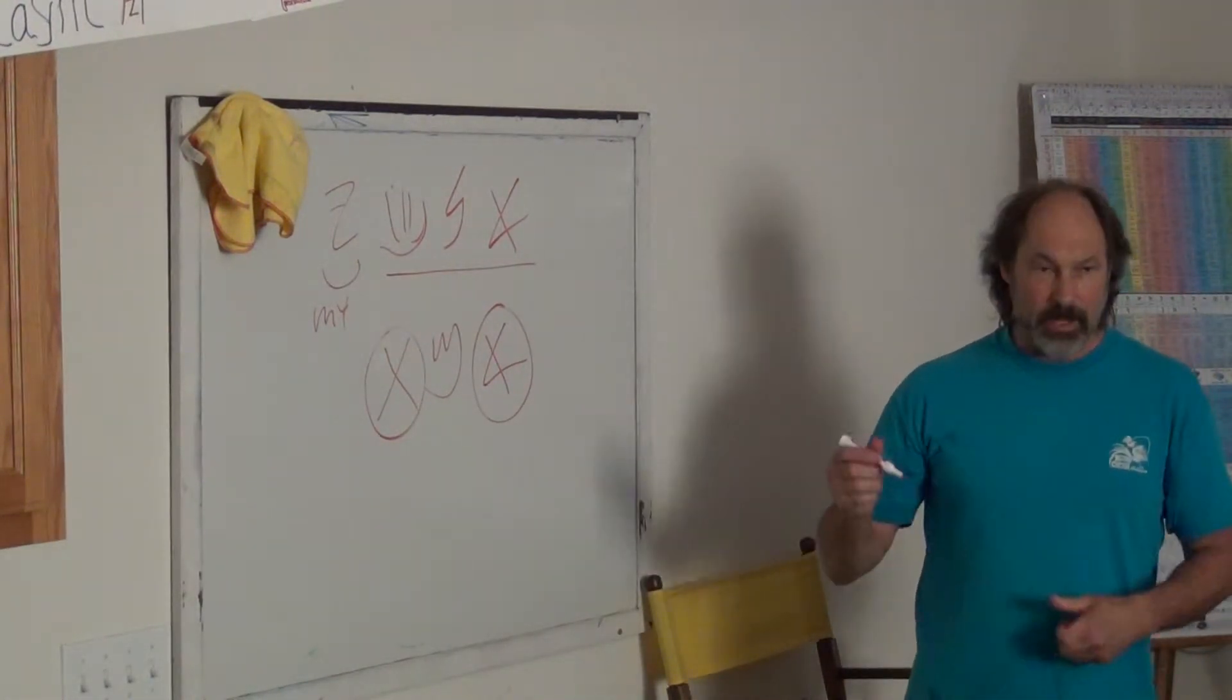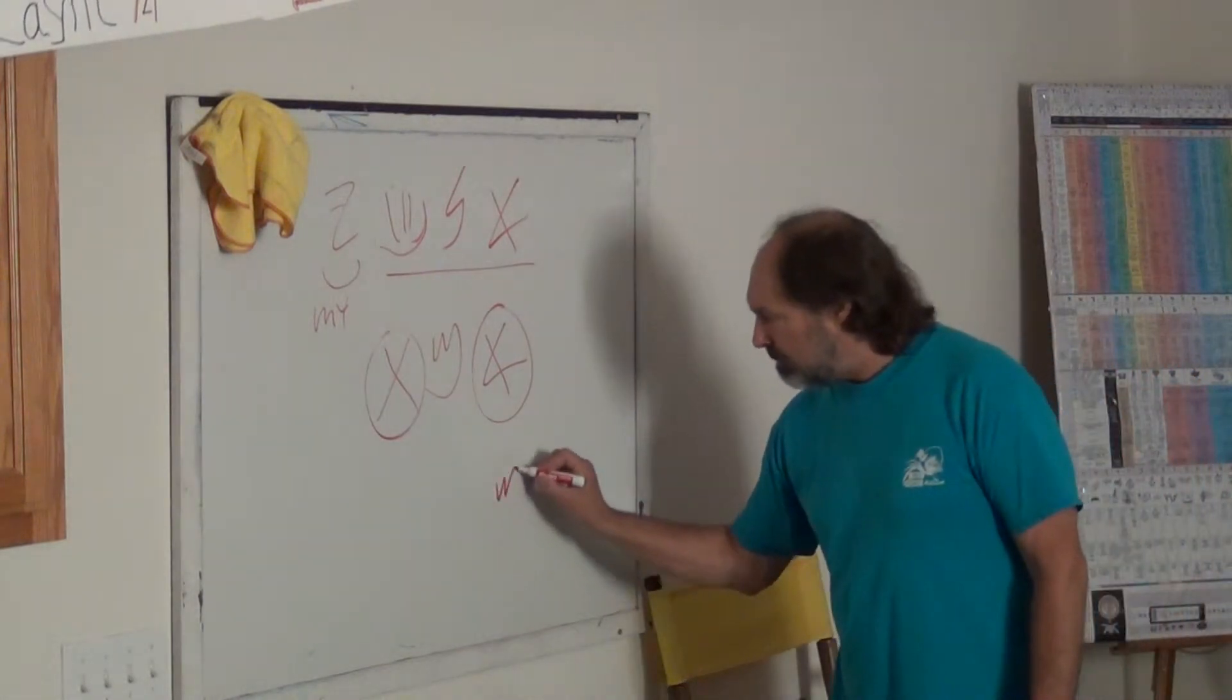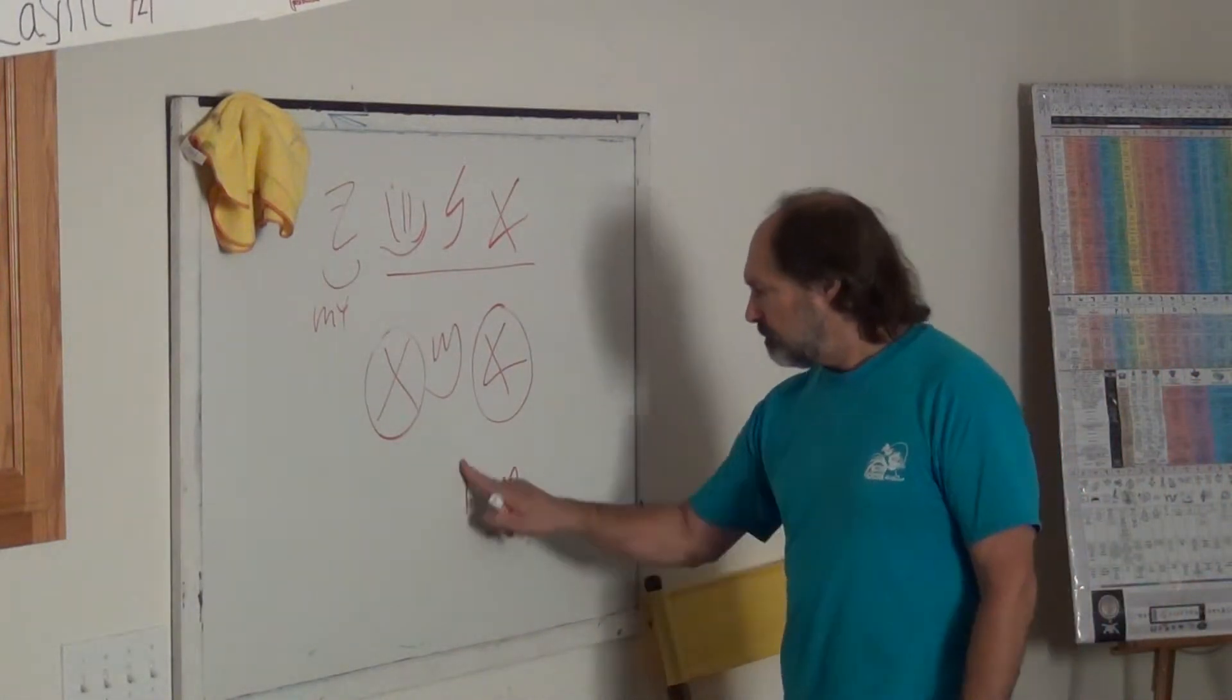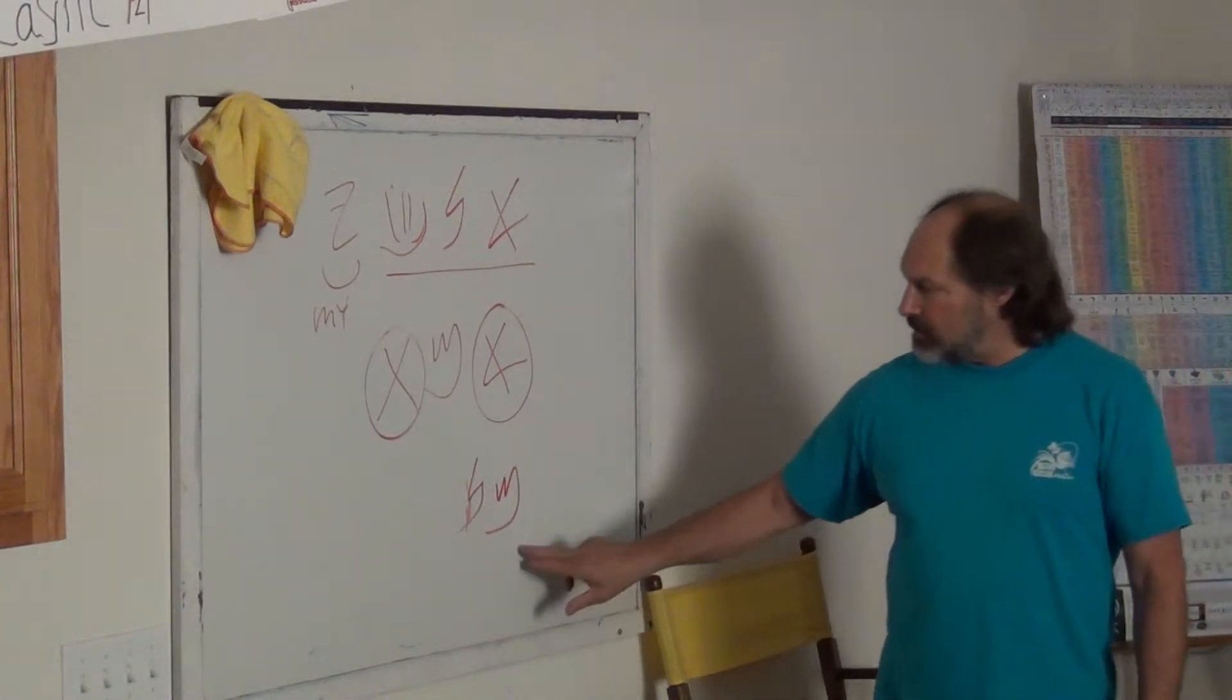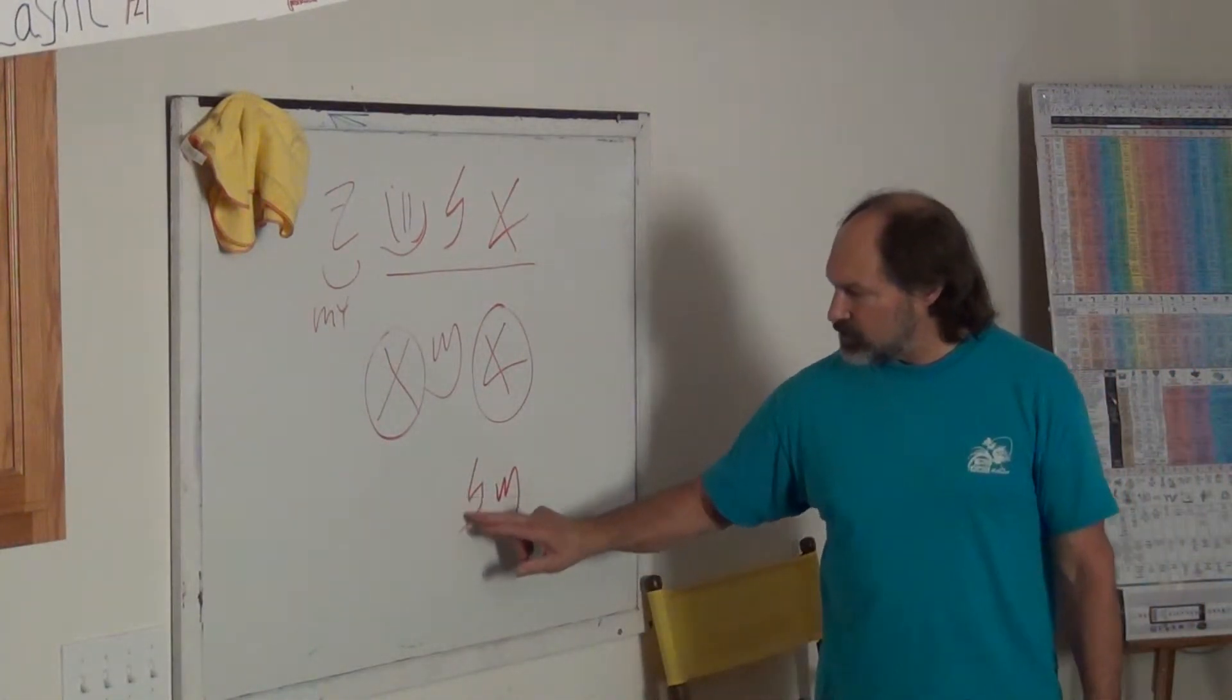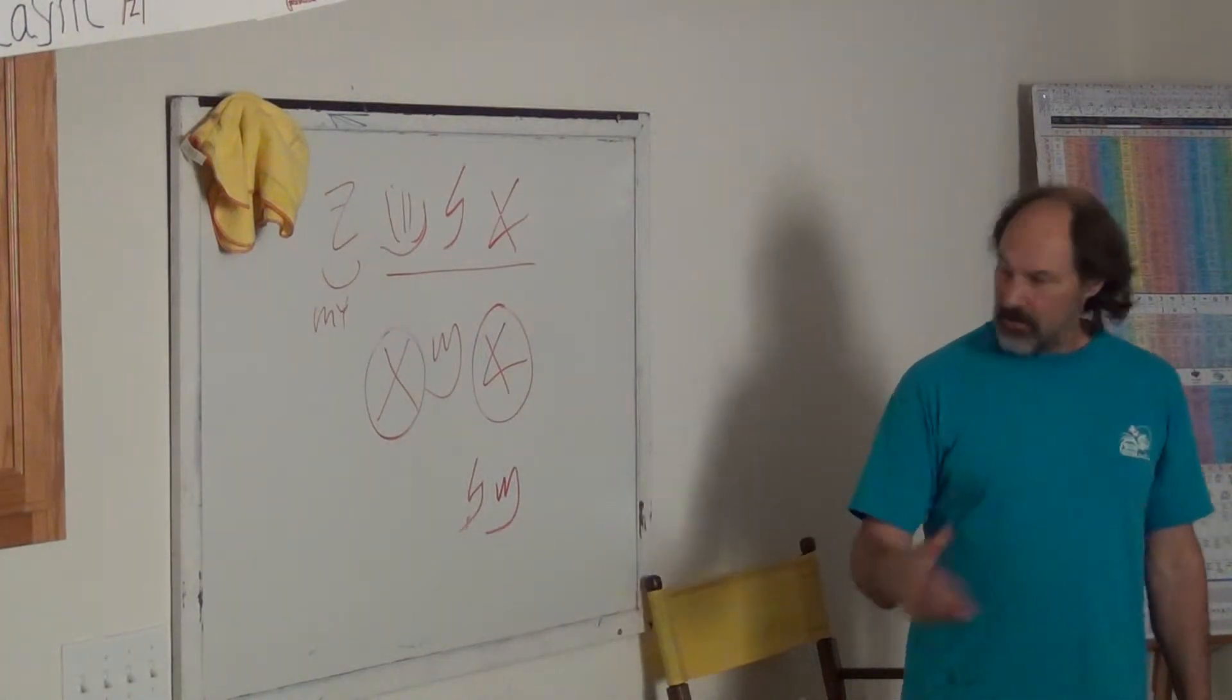So we'll get into this in a few minutes, in the alphabetic progression. But when you have Mem and Nun, as the English alphabetic sequence, this is M and N. Nun is known as a fish, or that which jumps out of the water.